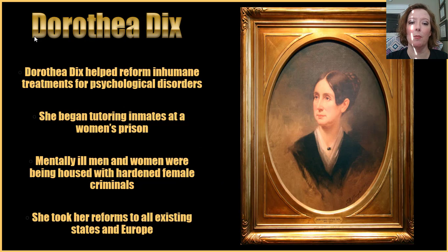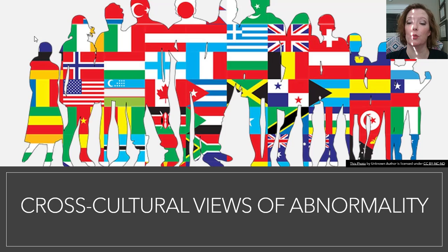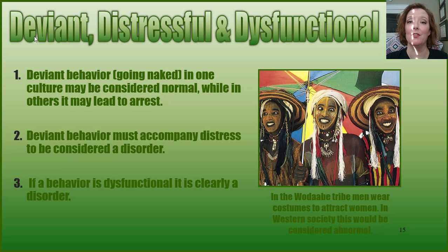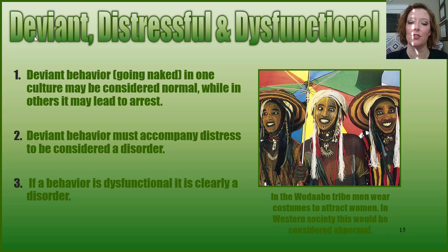Here in the United States, Dorothea Dix was a very important figure in reforming inhumane treatment for psychological disorders. She began tutoring inmates at a women's prison and found that mentally ill women and men were being housed with hardened criminals. She made important reforms to start addressing mental illness and took those reforms to all existing states as well as Europe. When we look at cross-cultural views of abnormality, deviant behavior in one culture may be considered normal while in others it may lead to arrest. In all cultures, deviant behavior has to accompany distress to be considered a disorder, but if the behavior is dysfunctional, it is clearly a disorder.